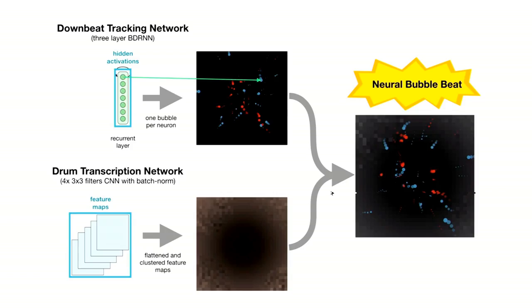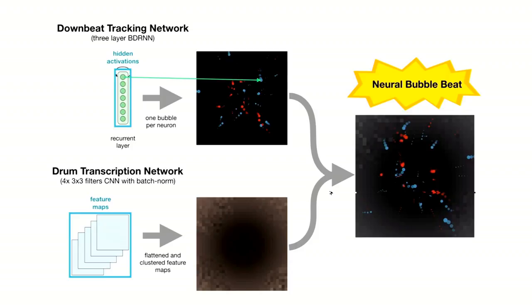Charges with different polarization attract each other and charges with the same polarization push each other away. The color represents the polarization of the charge — red means positive, blue means negative — and the particle size is roughly proportional to the activation magnitude. You can find the code at the repo. In the demo video you'll see bubbles moving according to the beat, changing polarity. It looks kind of cool.